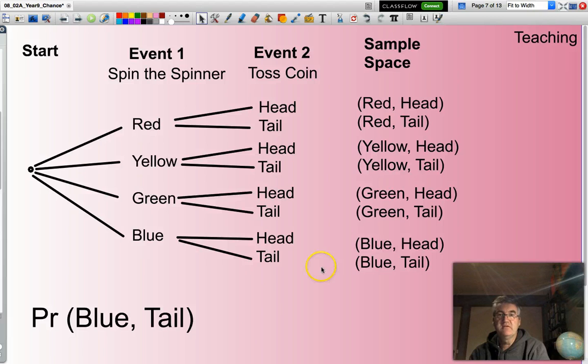I would look here to see how of all these outcomes in which there are eight, how many are blue followed by a tail? And you can see here, there is one.